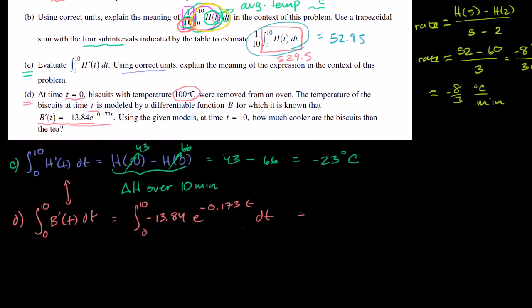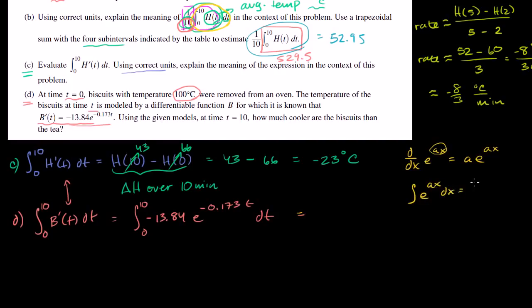Now we evaluate this integral. The derivative of e to the ax is ae to the ax by the chain rule, so the integral of e to the ax dx equals 1 over a times e to the ax plus C. Using that, the antiderivative here is negative 13.84 divided by negative 0.173 times e to the negative 0.173t, evaluated from 0 to 10.